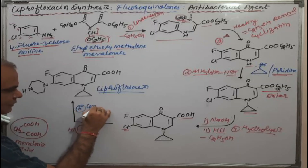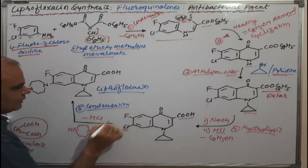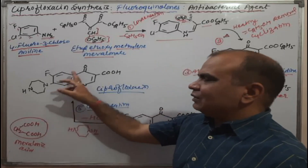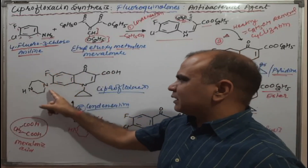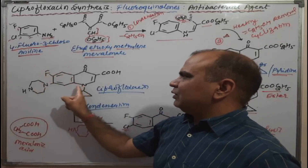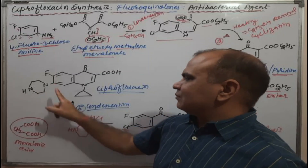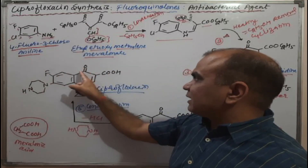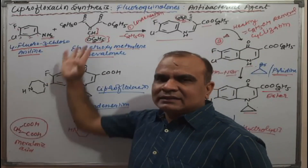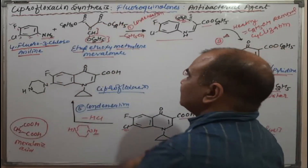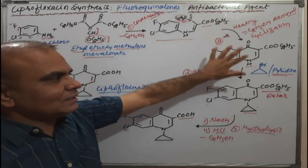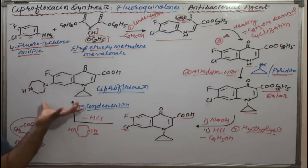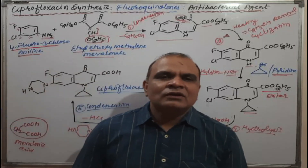The last step is a condensation reaction — that is our fifth reaction. In this fashion, we can correlate and understand the synthesis. Looking at the complete structure of ciprofloxacin: we start with the chloroaminoaniline part, use malonic acid derivative, and proceed through condensation, cyclization, alkylation, hydrolysis, and finally condensation with the piperazine moiety. This is all about the synthesis of ciprofloxacin.